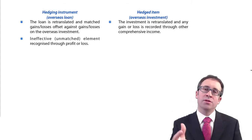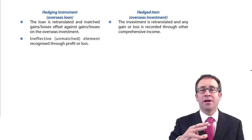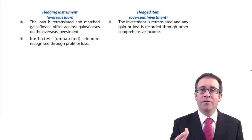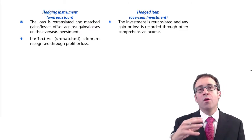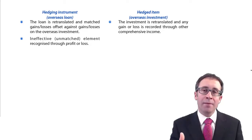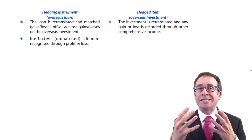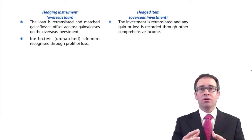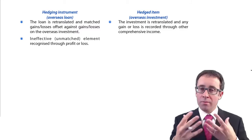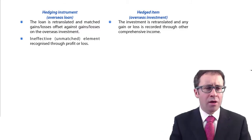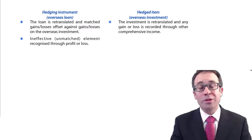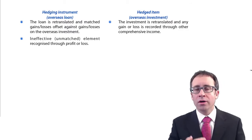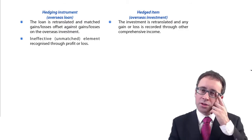If that's the case, the subsidiary's assets and liabilities denominated in a foreign currency will need to be translated into the presentation currency of the parent — you'll remember that from the overseas consolidation work covered back in F2.